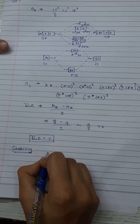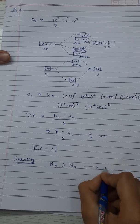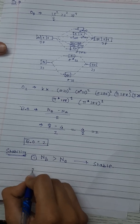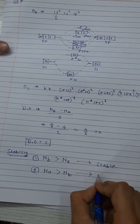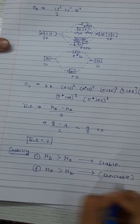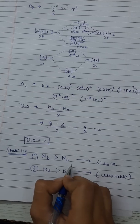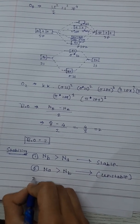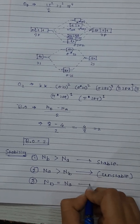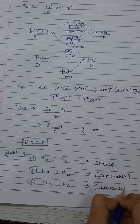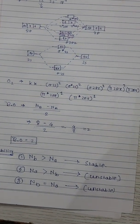To determine stability: if the number of bonding molecular orbitals is greater than the number of antibonding molecular orbitals, the molecule is stable. If the number of antibonding molecular orbitals is greater than the number of bonding molecular orbitals, the molecule is unstable. For a molecule to exist, the number of bonding molecular orbitals must be greater than the number of antibonding molecular orbitals. Thanks for watching!